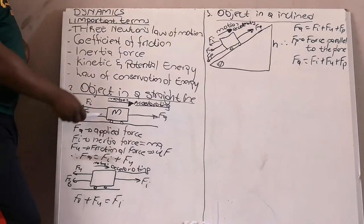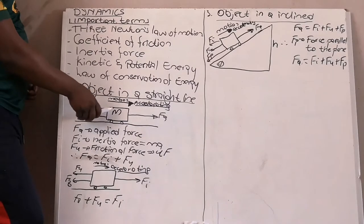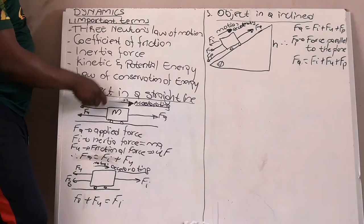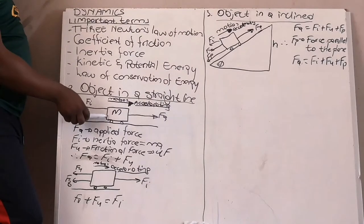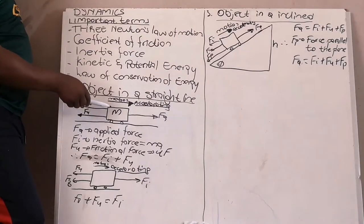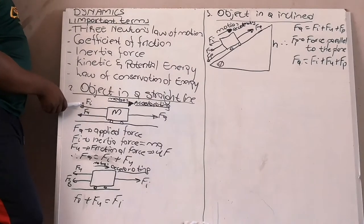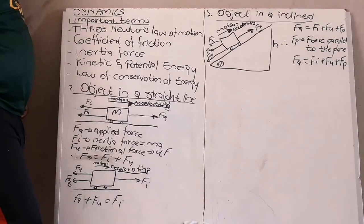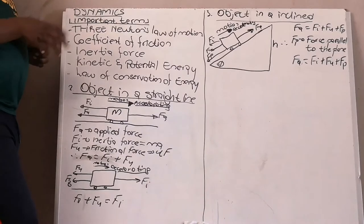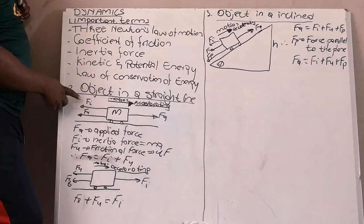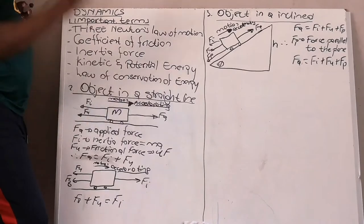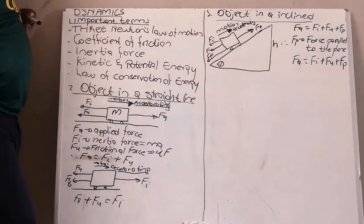The mass is subjected to a motion accelerating towards east. You also have a friction force — most likely there will be a friction force. And you have an inertia force. Whenever an object is accelerating, it will have an inertia force. So you have three forces acting on this object.